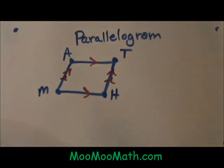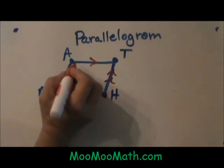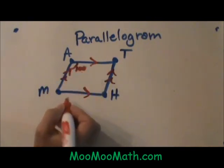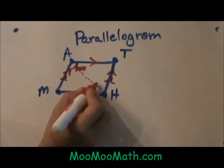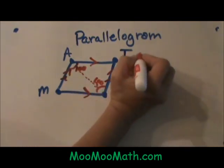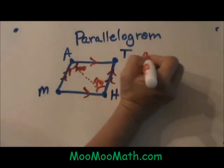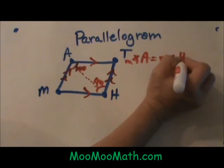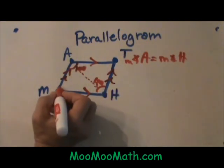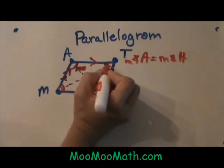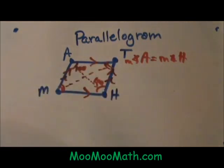Now some other properties are going to be that the opposite angles are congruent. Meaning if angle A is 100 degrees, the angle on the opposite side of the parallelogram would also be 100 degrees. So angle A, the measure of angle A would be the same as the measure of angle H. Meaning also that angle M and T also have congruent measures. That is one of the properties.